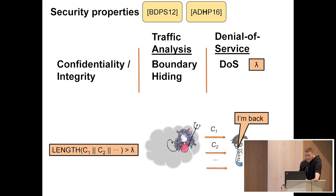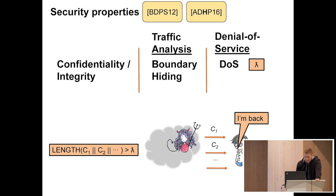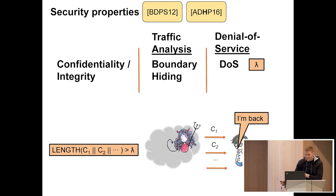The DOS notion is going to capture security against denial of service, and it's parameterized by a parameter lambda. It essentially says that no adversary can make Bob hang or wait by making him expect more than lambda amount of ciphertext. This means the lower the lambda is, the better Bob is at detecting denial of service attacks and the faster he can respond.